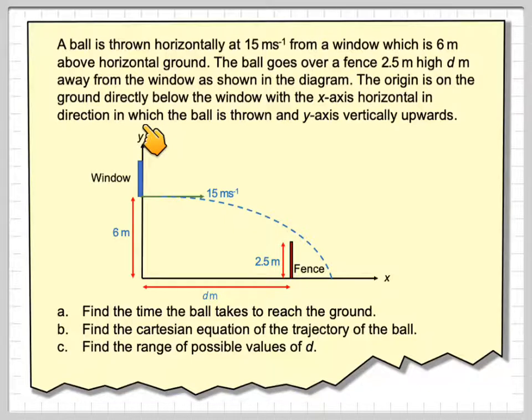The origin is on the ground directly below the window and the x-axis is in the horizontal direction in which the ball is thrown. And the y-axis is vertically upwards so we've got an axis here, x and y.